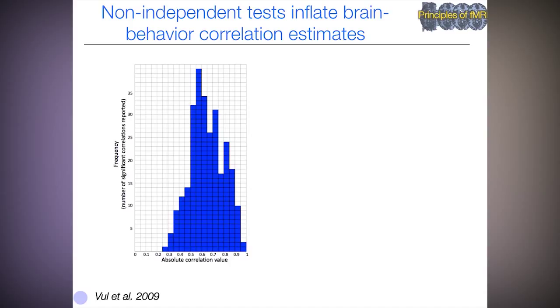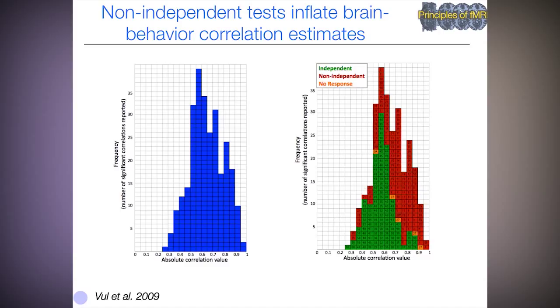This circularity phenomenon is one of the issues raised in the voodoo correlations debate. Non-independent tests inflate brain-behavior correlation estimates. A histogram from the literature shows reported correlations between brain and behavior ranging from about 0.2 to nearly 1, which seem like incredibly large effect sizes. The authors broke these down into tests that were independent of voxel selection criteria (shown in green) and those that were not independent (shown in red), illustrating the inflation of apparent effect size due to non-independent testing.